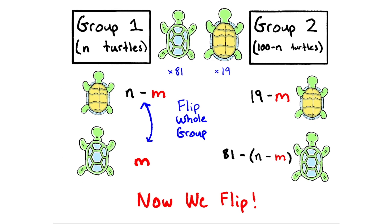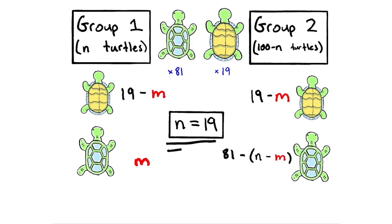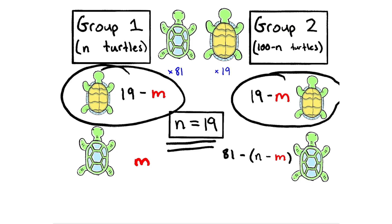Now, after flipping all the turtles in group 1, we're left with n minus m belly up turtles and 19 minus m belly up turtles in group 2. Now, how can we make sure that these two numbers are always the same? Well, we can set n equal to 19. And in this case, the number of turtles in group 1 that are belly up always equals the number of turtles that are belly up in group 2.